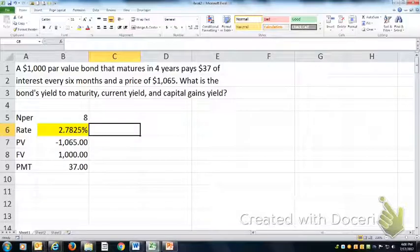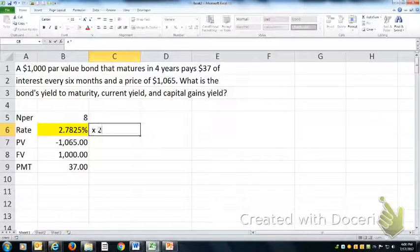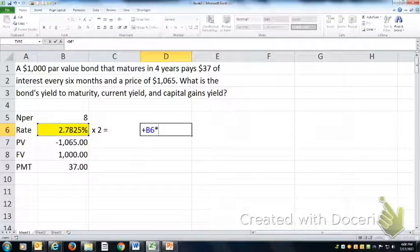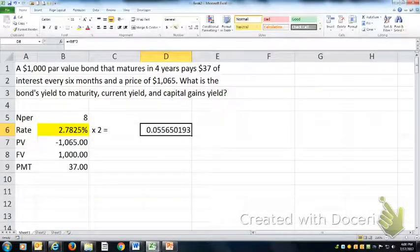And I want the yield to maturity, so I multiply by two to convert that to an annual number, and that's the yield to maturity.